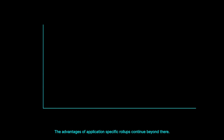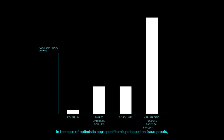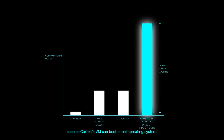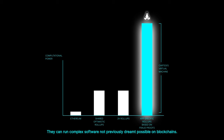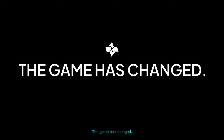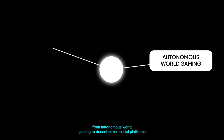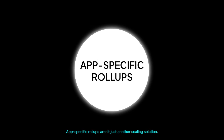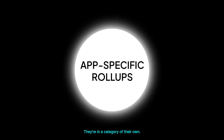The advantages of application-specific roll-ups continue beyond there. In the case of optimistic app-specific roll-ups based on fraud proofs, the computational gains are so pronounced that new blockchain virtual machines such as Cartesi's VM can boot a real operating system and run complex software not previously dreamt possible on blockchains. This newfound freedom opens doors to an array of possibilities, from autonomous world gaming to decentralized social platforms and sophisticated governance systems. App-specific roll-ups aren't just another scaling solution — they're in a category of their own.